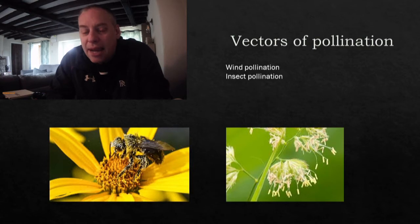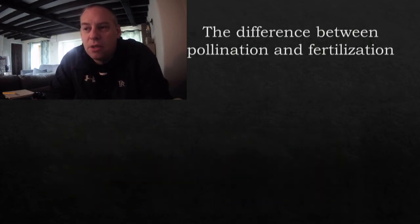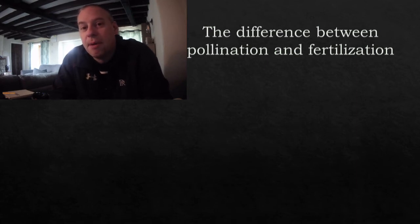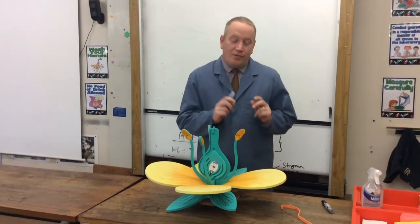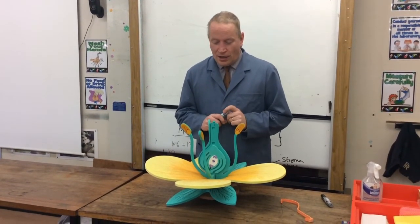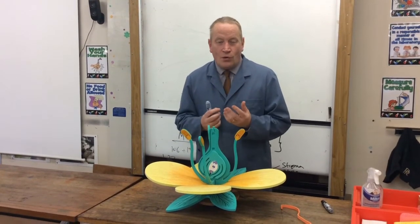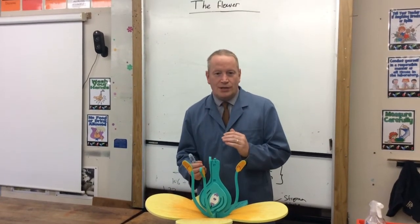When the pollen gets to the plant, it lands on the stigma. We have two processes to understand: pollination and fertilisation. These are two words that are very commonly mixed up or gotten wrong — they are two separate processes within the plant.